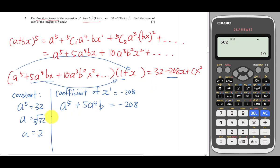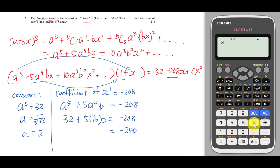I have the value of a, which is 2, so it's 32 + 5·16·b = -208. Solving this equation: minus 32 gives -240, and this gives 80b. Divided by 80, b equals -3.